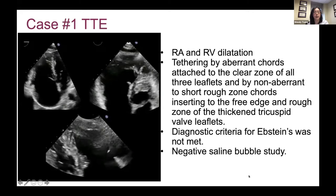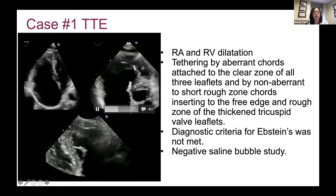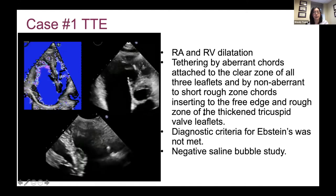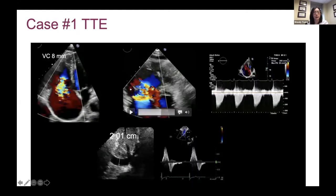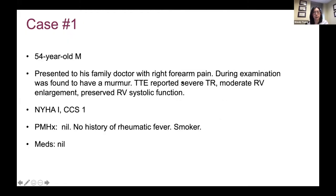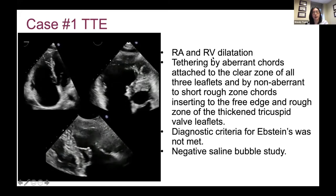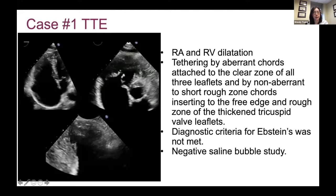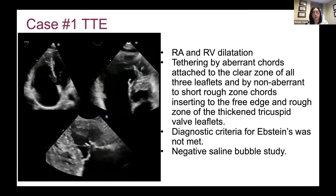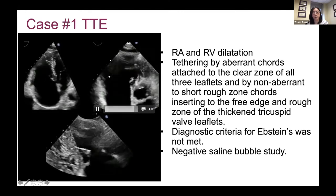This is a transthoracic echocardiogram. This is the apical four-chamber view, the short axis view with the aortic valve, and the RV inflow view. I'm showing these images so you can compare them with the transesophageal echocardiogram images I'll show later. What you want to notice is that the RV and RA are both dilated. There is a lot of tethering, and you can see these tethered cords on the leaflets causing significant problems.